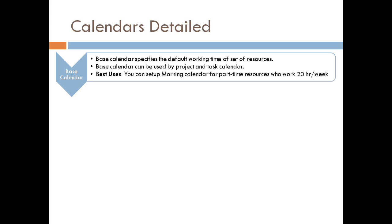Just to help you understand the four calendars, let me summarize them. The first is the base calendar. Microsoft Project provides three by default: Standard, Night Shift, and 24 Hours. You are free to create your own new base calendar through the Change Working Time option. The base calendar represents the default working time of your resources and can be used as a project calendar, task calendar, or resource calendar. For example, if a team works across three locations — Chennai, Pune, and Kolkata — each with different working times, you would create three base calendars.